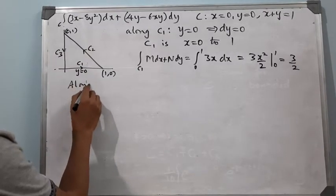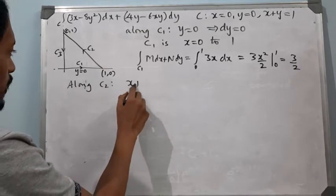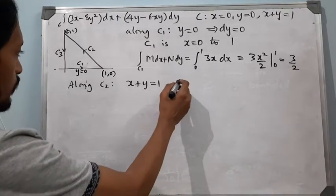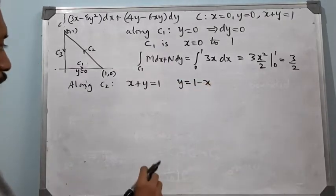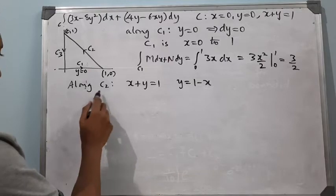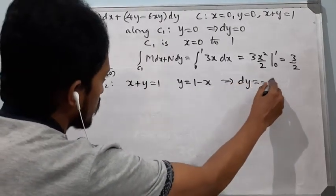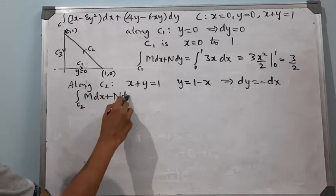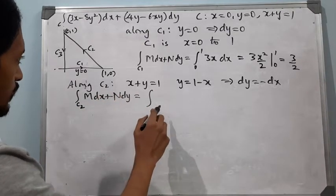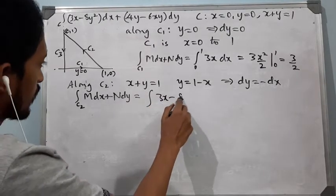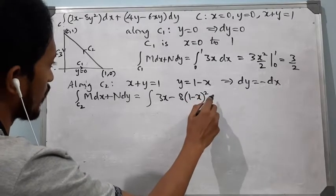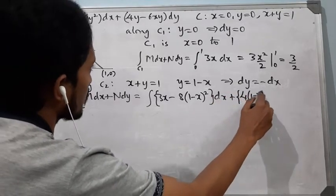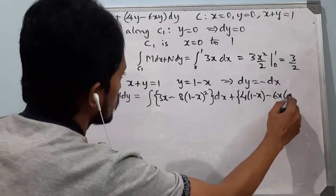Now along C2, we have x + y = 1, so we convert to one variable. Taking y = 1 − x, this implies dy = −dx. So the integral along C2 of M dx + N dy becomes the integral of [3x − 8(1−x)²] dx plus [4(1−x) − 6x(1−x)](−dx).